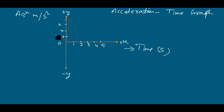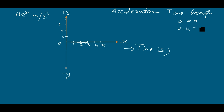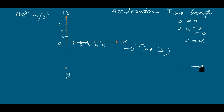Suppose I am drawing the first graph just along the x-axis — what does this mean? This means there is no acceleration, or acceleration equal to zero. That means the change in velocity is equal to zero, which means V equals u — the final velocity is equal to the initial velocity.